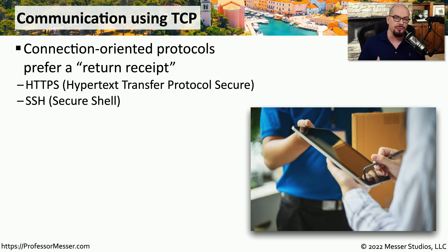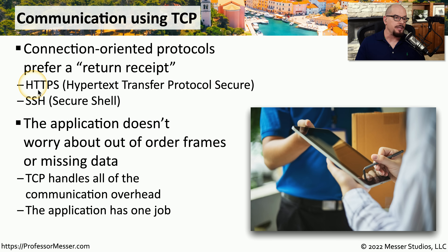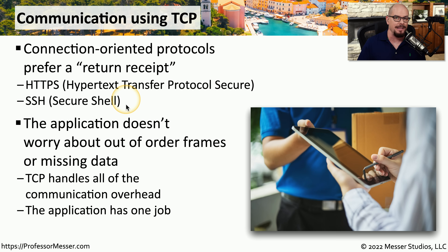With TCP, we receive an acknowledgment for any packets that are sent over the network. Examples of protocols that take advantage of this return receipt functionality include HTTPS, the Hypertext Transfer Protocol Secure, commonly used to send information in web browsers, and Secure Shell, or SSH, which provides an encrypted form of terminal communication. If HTTPS data between a web server and a client loses a packet, TCP will recognize the missing packet, ask to retransmit it, and HTTPS and SSH don't have to worry about managing the process of getting data from one side to the other.